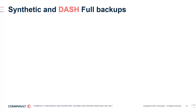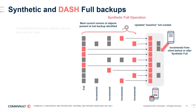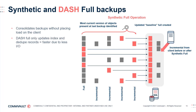Synthetic full backups consolidate the data from the latest full backup or synthetic full backup together with any subsequent incremental backups, instead of reading and backing up data directly from the client computer — imposing no load on the client. With deduplicated data, a synthetic full by default utilizes a faster variation called Dash full, where only the deduplication and index records are updated without the need to read each block and generate a signature, resulting in much faster completion. A common misconception is that synthetic fulls are a new backup, but in fact the actual data protection is done by the latest incremental. The synthetic full is used to consolidate previous backups for space reclamation via the data aging process.